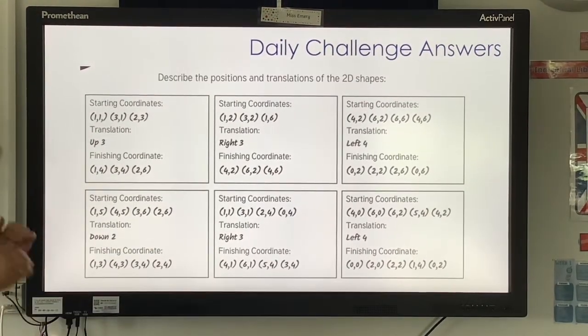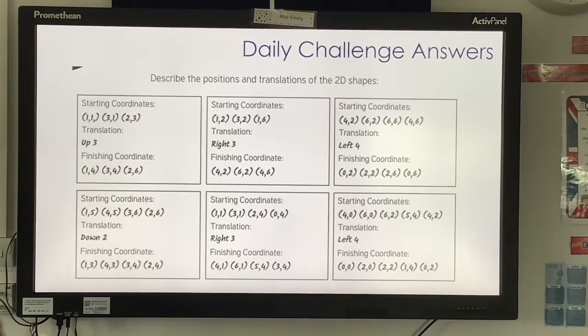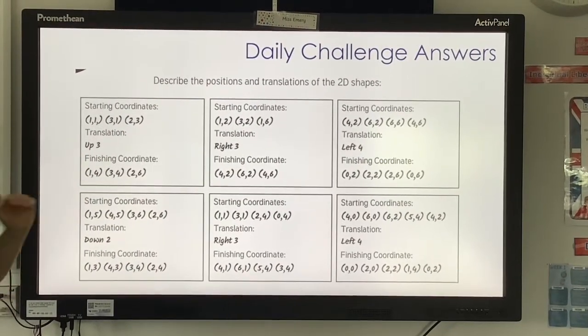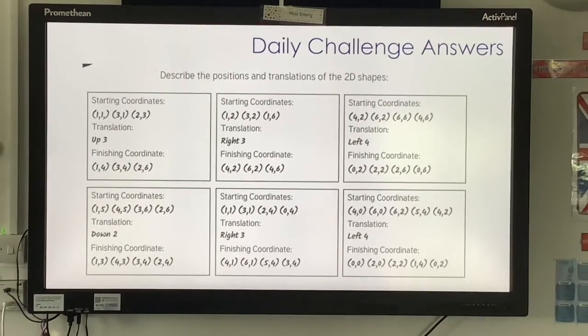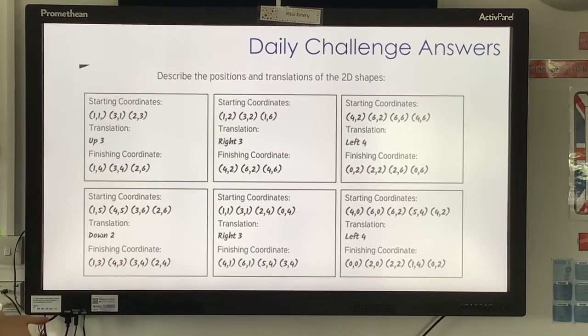The only thing I want you to check with your coordinate is that you put X and then Y and not Y and then X. So maybe pick a coordinate of each and just check that you've gone XY and not YX. But don't panic if your answers are slightly different because if you picked a different point, they will be.